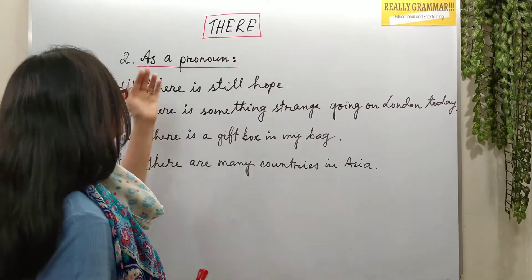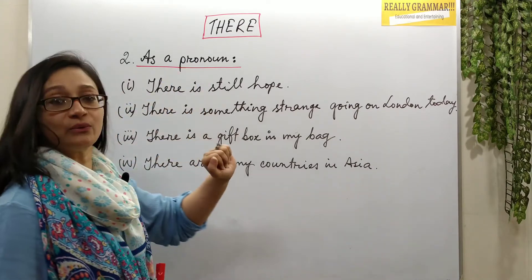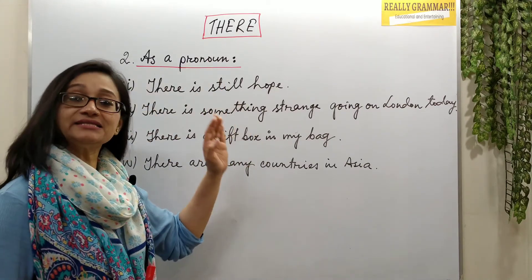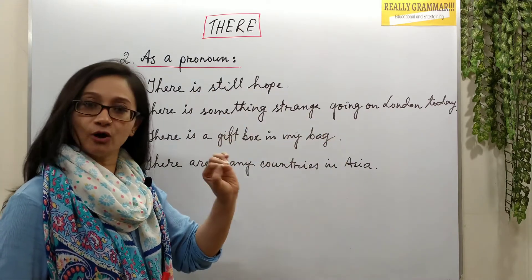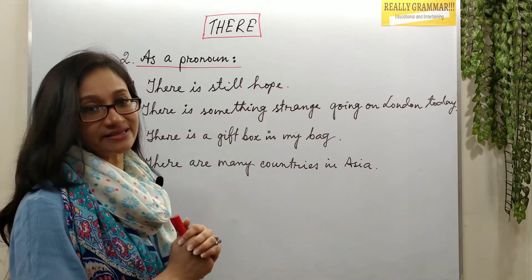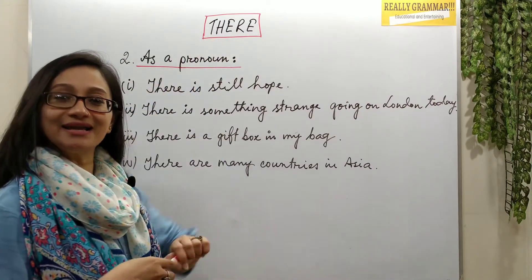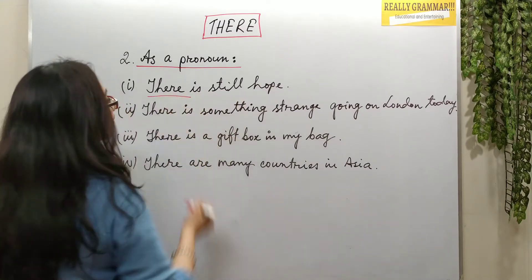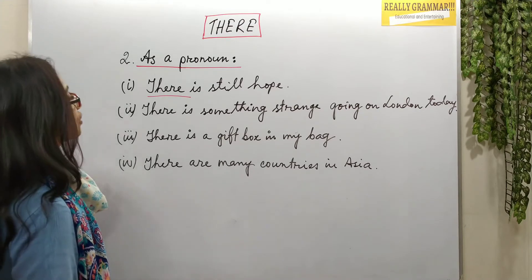The second use of T-H-E-R-E is as a pronoun, introducing the subject of a sentence or a clause, or to show that something exists. For example: 'There is still hope' — here 'there' is the subject of the sentence.